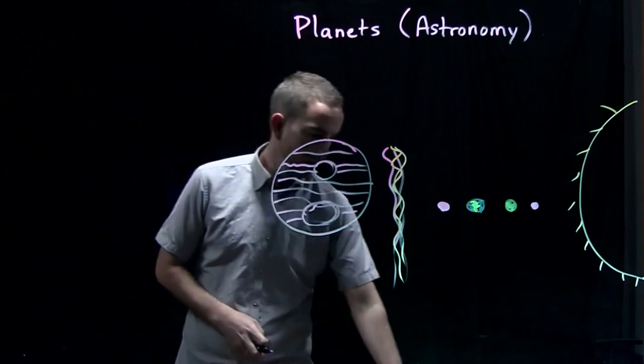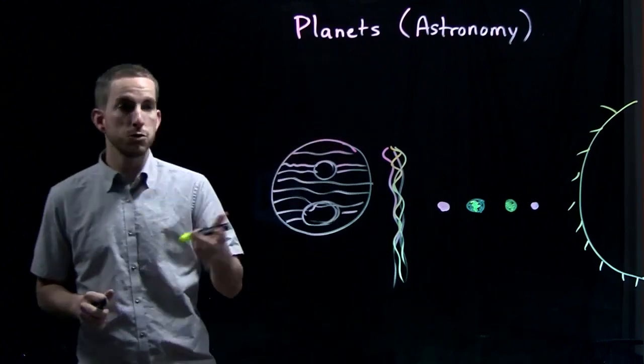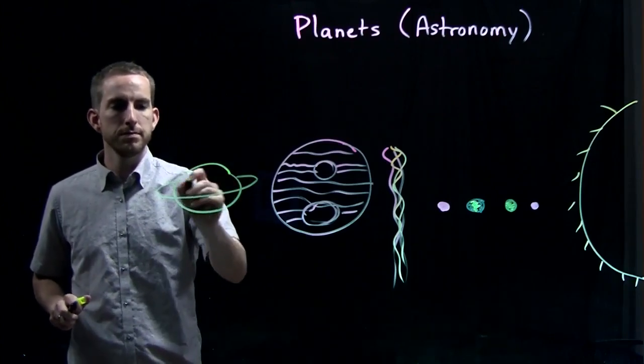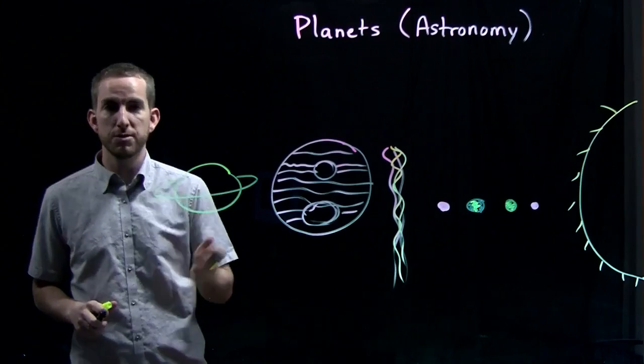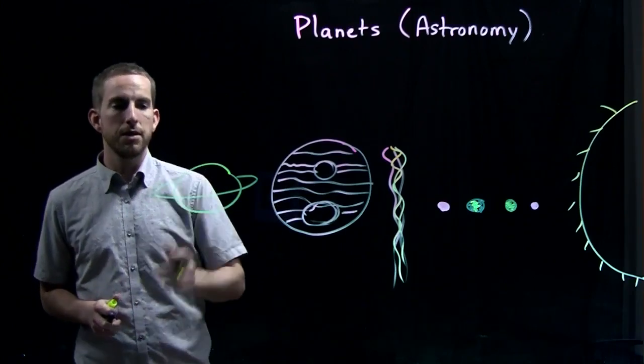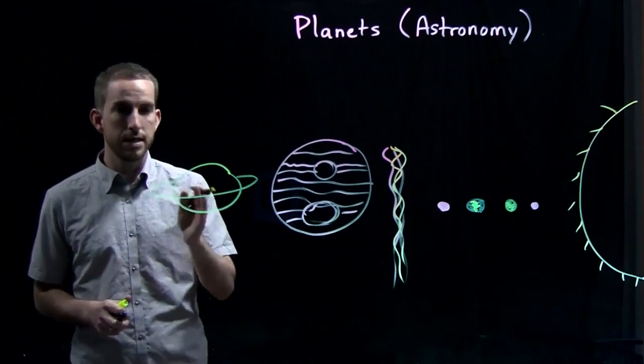And after Jupiter we have another big planet. And this one is called Saturn. Saturn is famous because it has a ring. Jupiter has a ring too, but you can't see it. But Saturn we can see the ring.